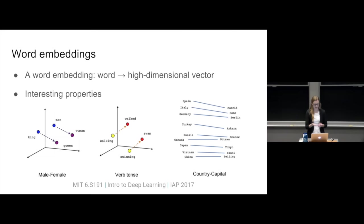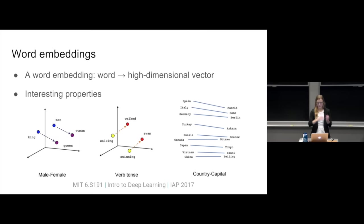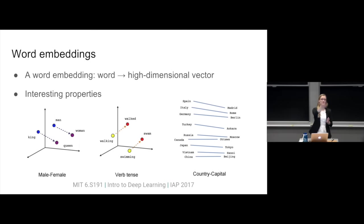There are some really interesting properties of word embeddings. You can learn analogies in this space: if you have the vector for king, subtract man, and add woman, you get something pretty close to queen. You can also do this for verb tenses — walking goes to walk, swimming goes to swim — and even geography, where you can take countries and go to capitals. You can even find something east of Germany. It's all preserved in this high-dimensional space.